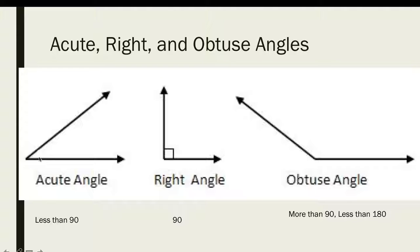Acute angle is the angle that is less than 90 degrees. Right angle is the angle that is exactly 90 degrees. Obtuse angle is the angle more than 90 and less than 180 degrees.